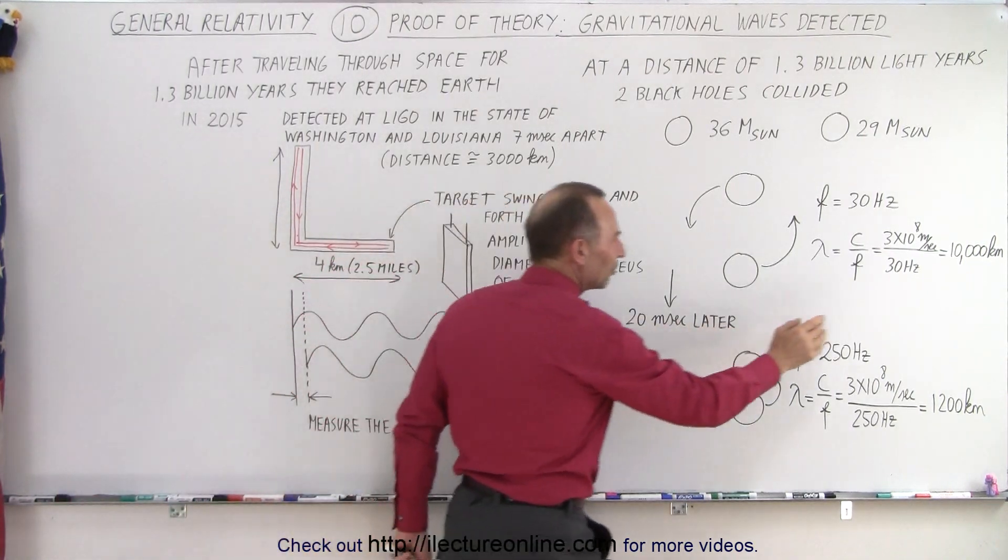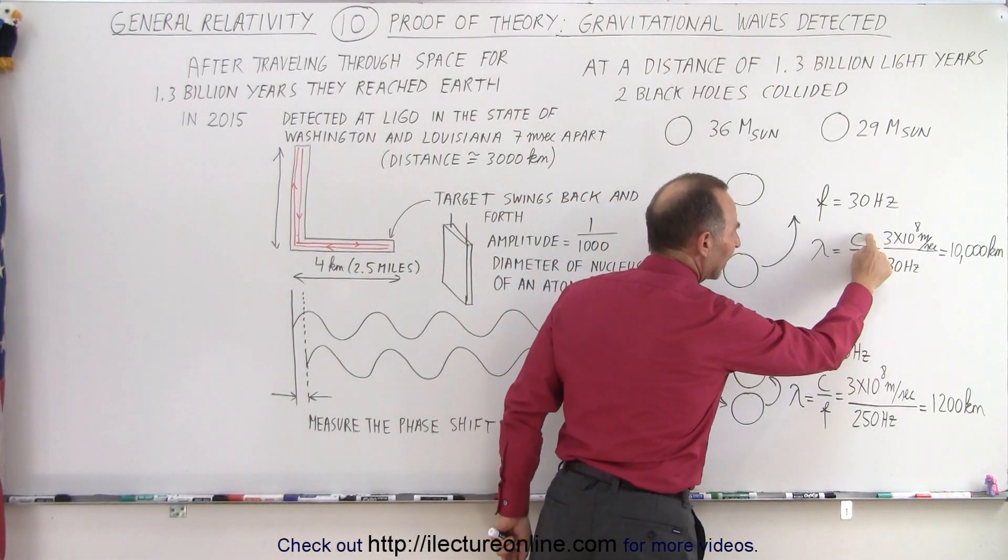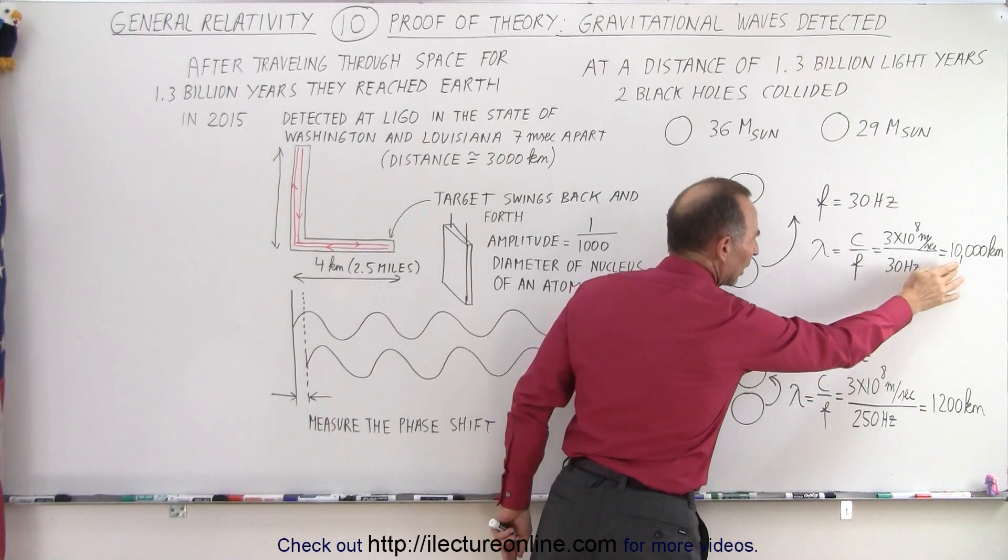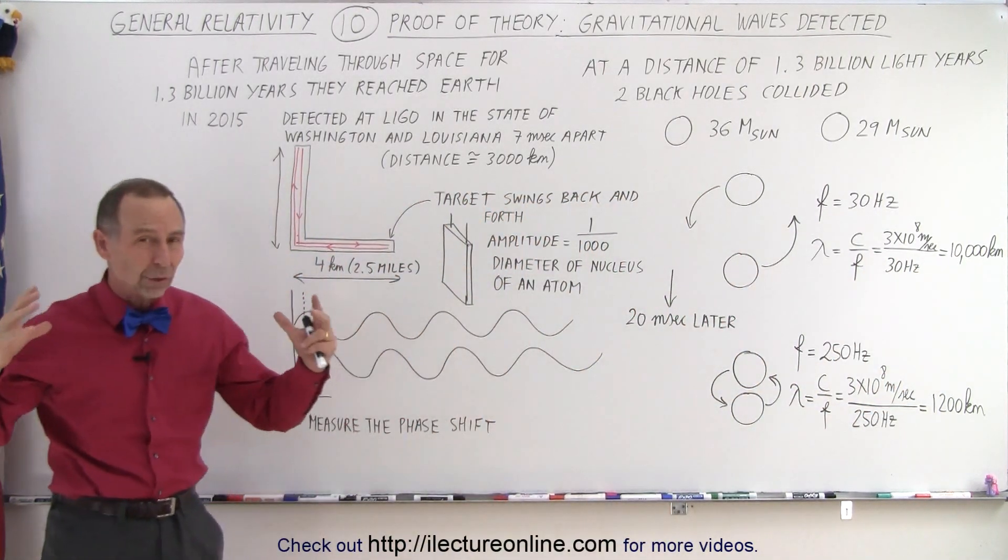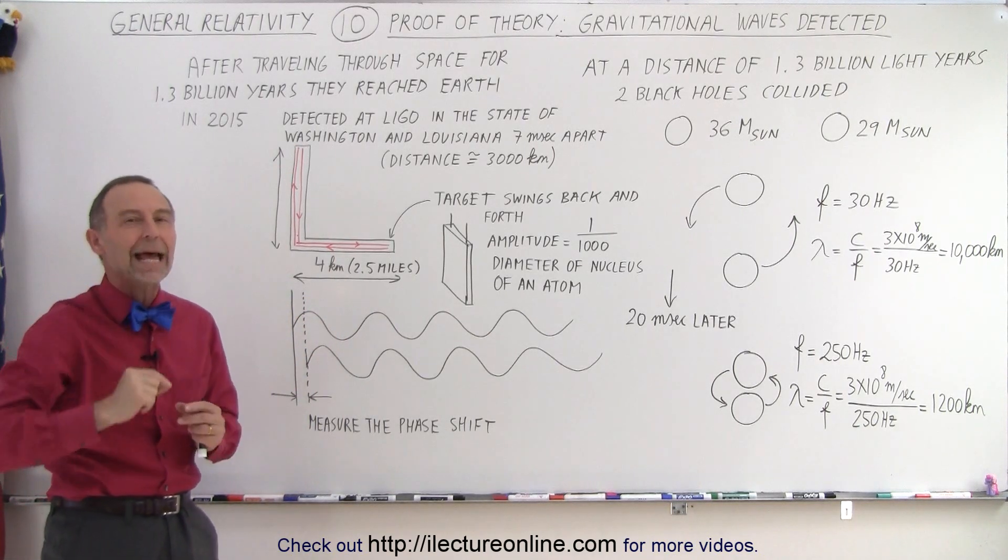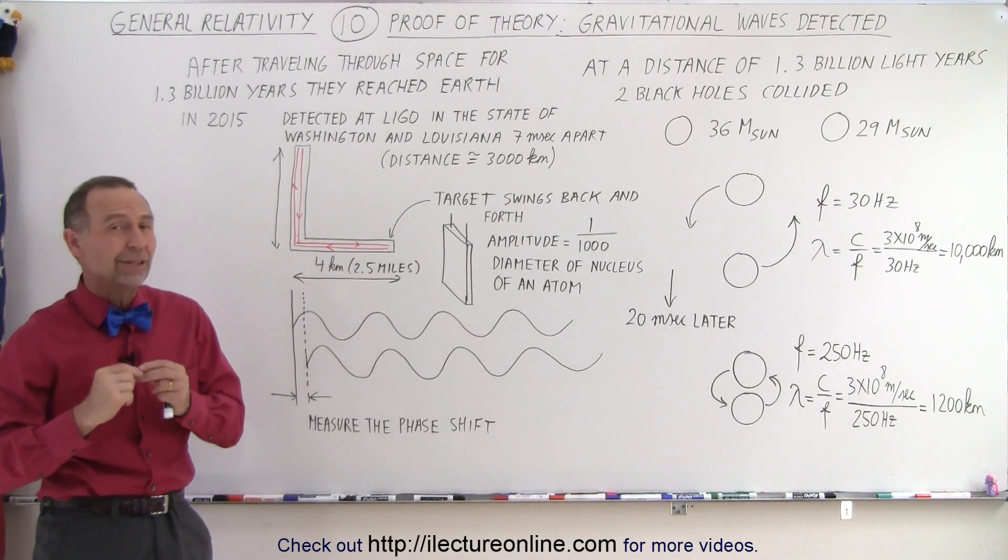That event was captured because it created gravitational waves that then traveled through the universe through a distance of 1.3 billion light years for 1.3 billion years until they finally reached Earth. And at that moment, in 2015, we detected the gravity waves passing by. Notice that the wavelengths of these waves are very long. If we take the speed of light divided by the frequency, you end up with some very long waves. They're very large in wavelength, but they're very, very tiny in amplitude, and that makes them so difficult to detect.